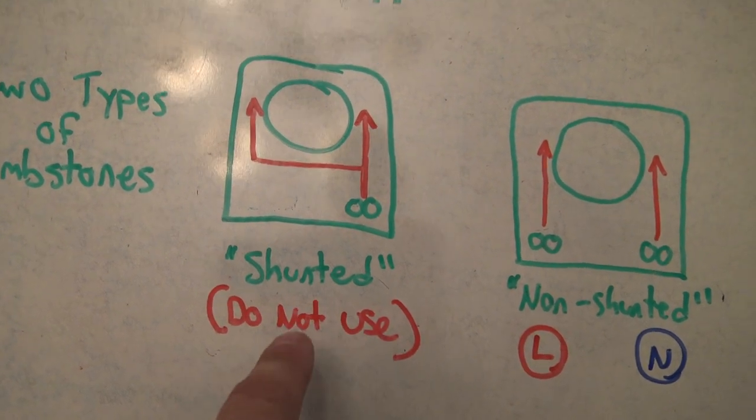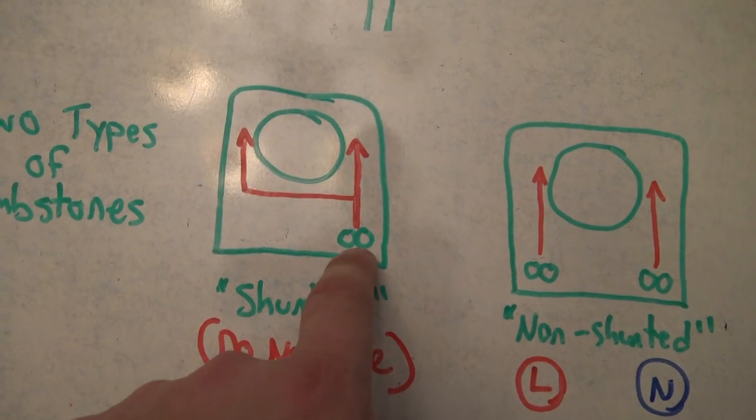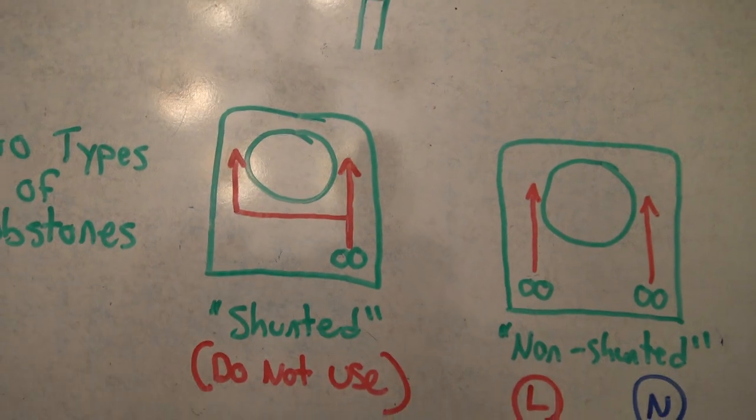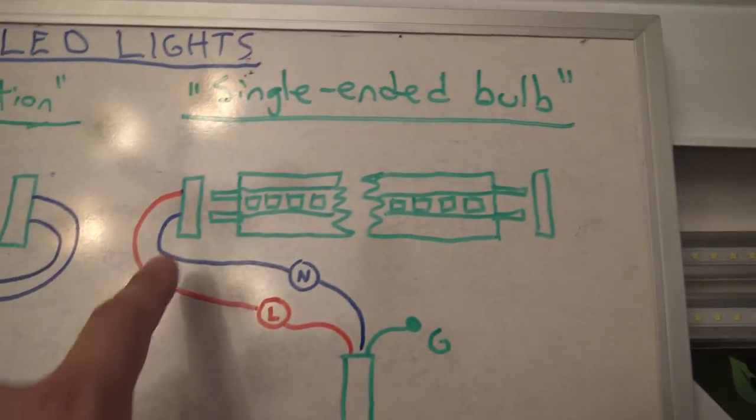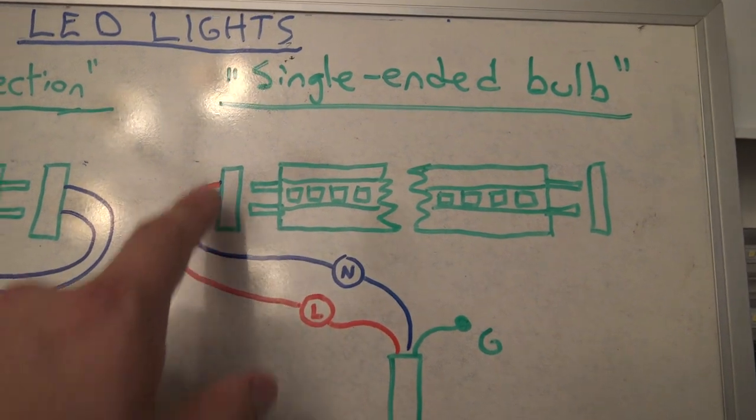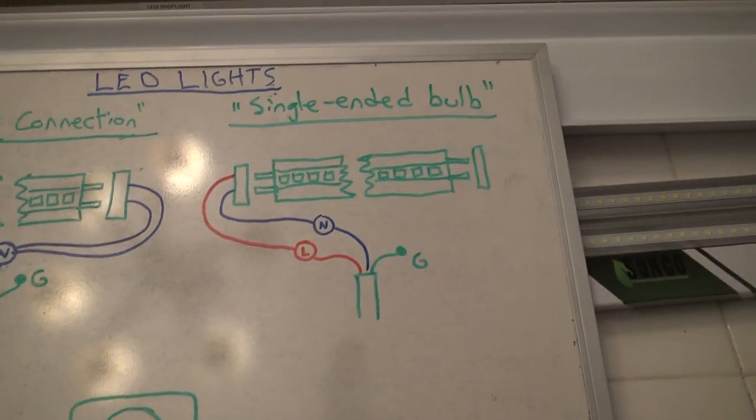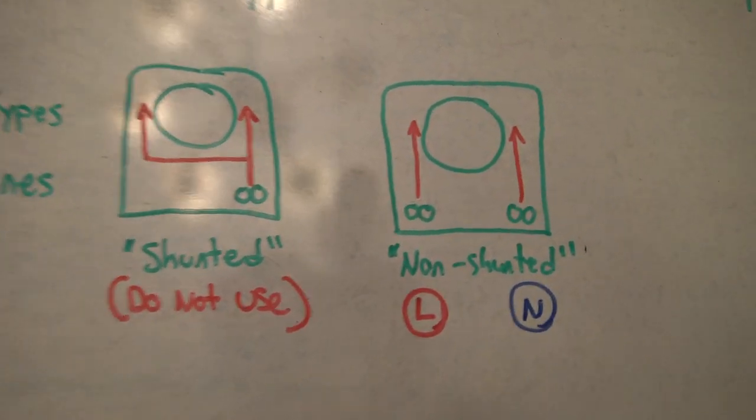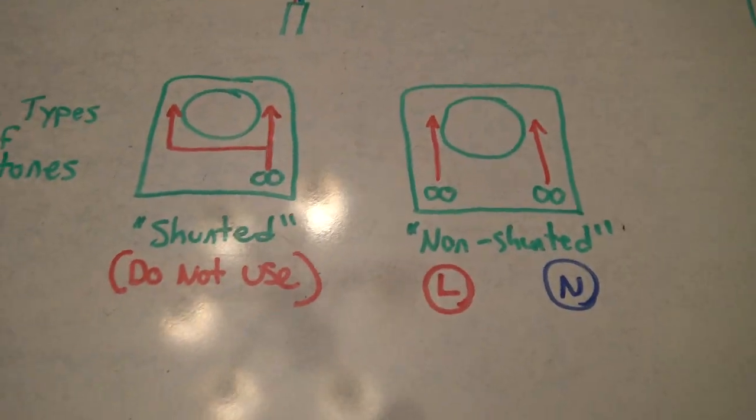Because the power only comes in one side, and then it goes to both terminals. So that might cause big problems if you have a single-ended bulb, because it would essentially connect your neutral and your load together, and you might short out your bulb. Again, I'm not an expert in electricity or anything like that, but it doesn't sound like a good idea.